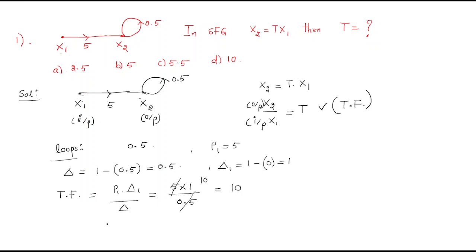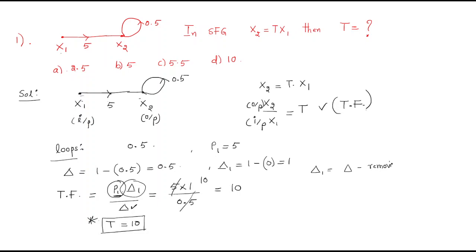Therefore t = 10. To summarize: when writing forward path P1 you must also write Δ1, where Δ1 is the value of Δ after removing all loops that are non-touching with forward path P1. Keep that in mind and you can solve any problem.